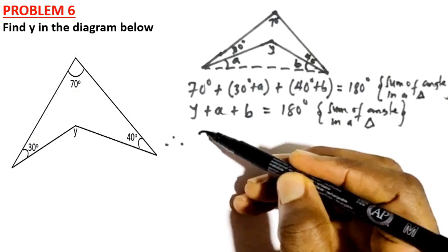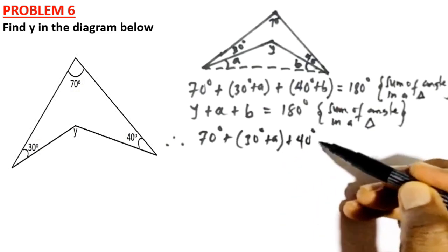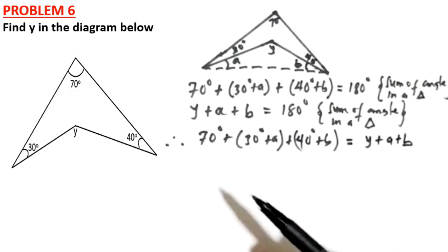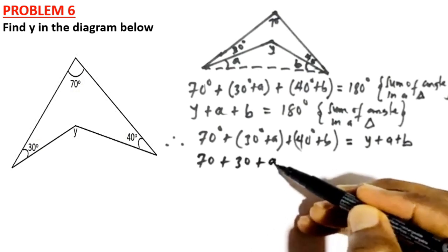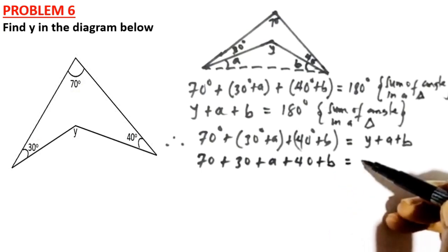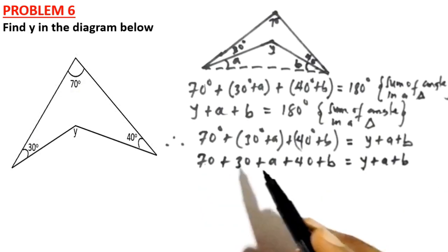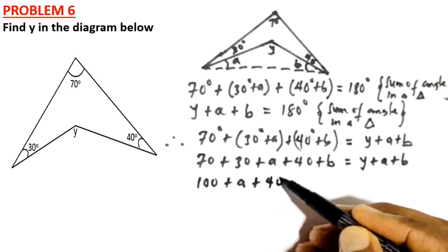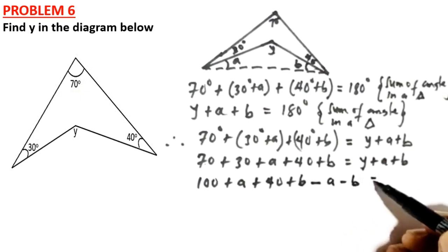Equating the two expressions: 70° + 30° + a + 40° + b = y + a + b. Simplifying the left side: 100° + 40° + a + b = y + a + b. Bringing a and b to the right side: 100° + 40° = y, since a and b cancel.